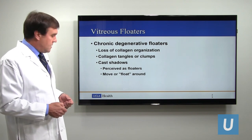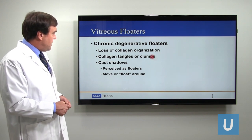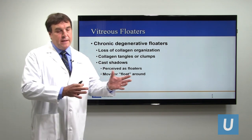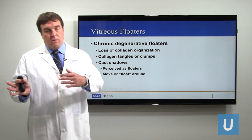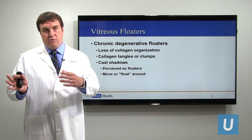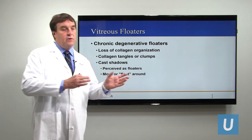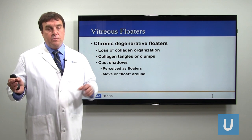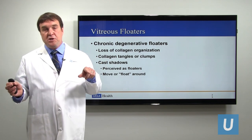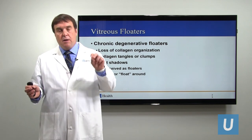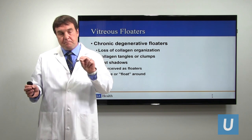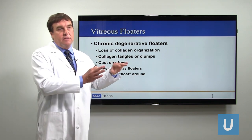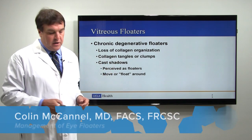Depending on the individual and how nearsighted the person is, chronic degenerative floaters can be more or less severe over time. The shadows are perceived as floaters, and because the gel fluid is semi-liquid, the shadow-causing opacities can float around — giving dark spots their name — moving with the eye, lagging behind, and swinging in and out of view.